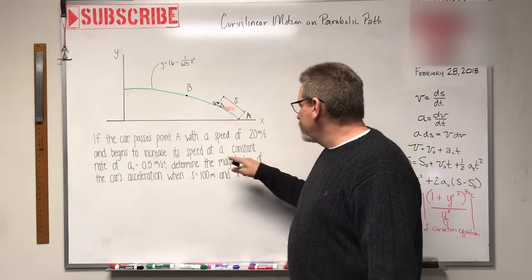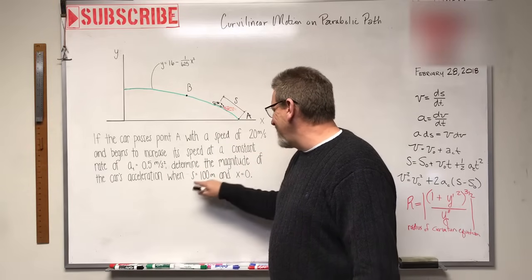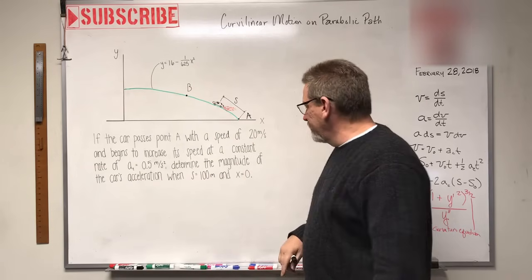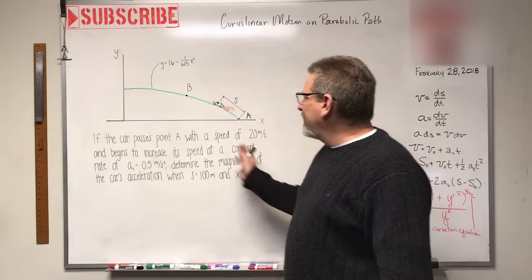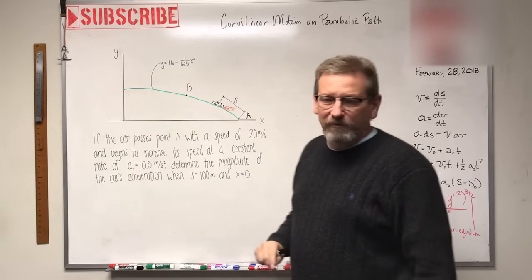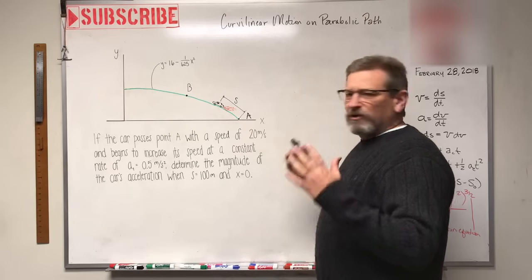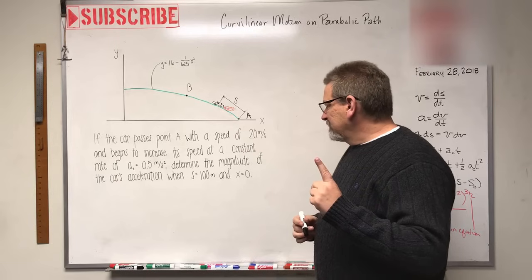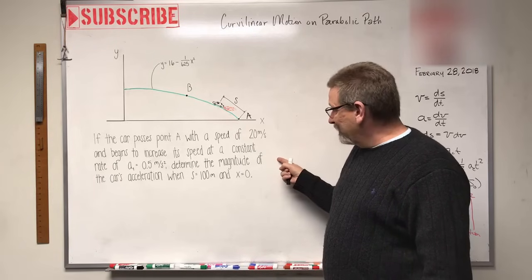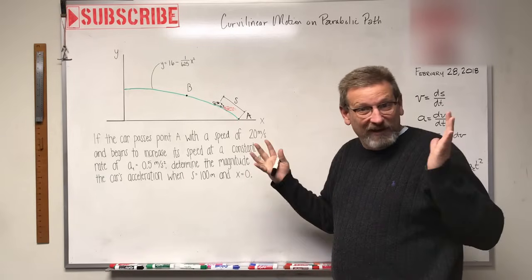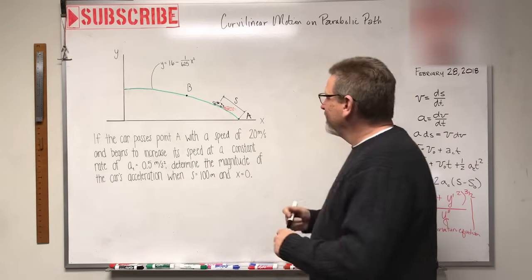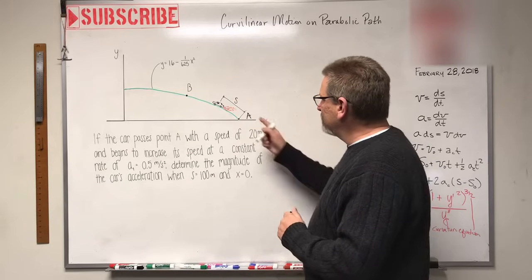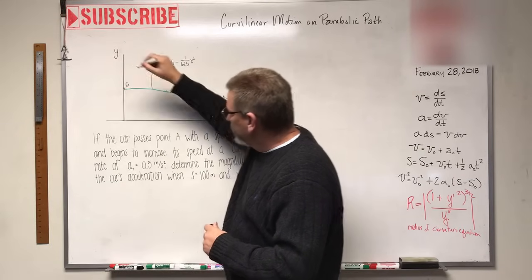Determine the magnitude of the car's acceleration when s equals 100 meters. Now s is the arc length along that curve, and when x equals 0, he's like right there - that's the point where x equals 0. First thing, you know I didn't write that, one of my students came in here, spent time and wrote this properly for me so y'all have a fantastic experience.